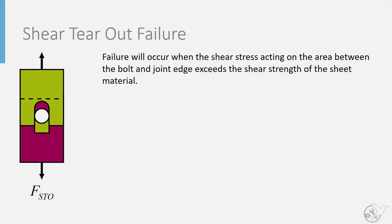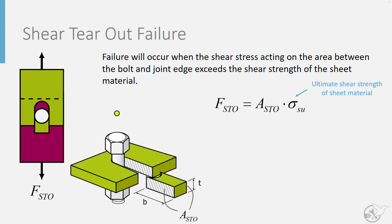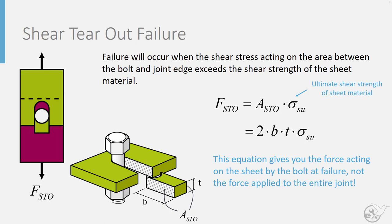Shear tearout failure occurs when the shear stress acting on the area between the bolt and the joint edge exceeds the shear strength of the sheet material. The shear tearout force is the area for shear tearout times the shear ultimate strength of the material. The shear tearout area is defined by the crosshatch area on both sides of the bolt, since two areas resist that failure mode, giving us 2 times the edge distance b times the thickness t. Again, this equation gives the force on the sheet by the bolt at failure, not the force applied to the entire joint.